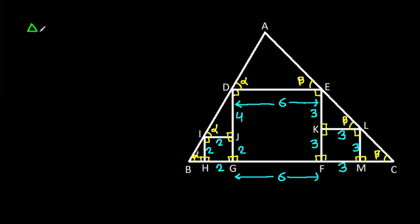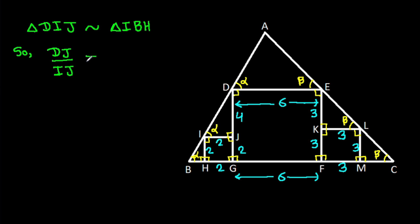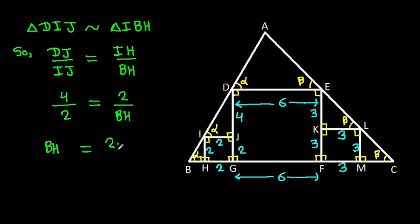Triangle DIJ will be similar to triangle IBH, because one angle is alpha and one angle is 90 degrees. So DJ over IJ equals IH over BH. That gives 4 over 2 equals 2 over BH. So BH = (2 × 2) / 4 = 1. So BH is 1.